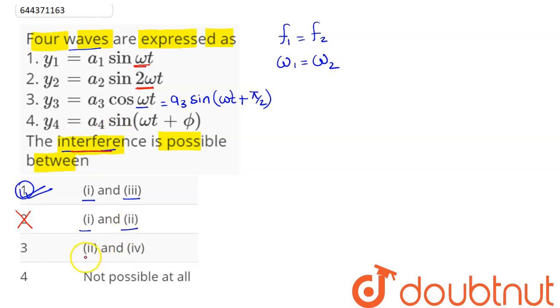Next for the third option, it says second and fourth. Here we can see second has angular frequency as 2ω and fourth has ω. So both have different frequency. Hence they can also not superpose. And fourth says not possible at all.